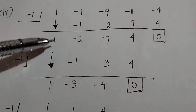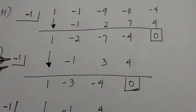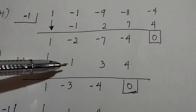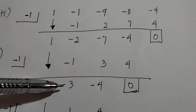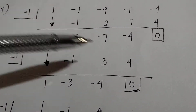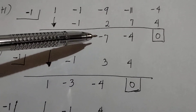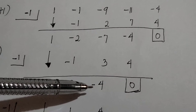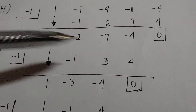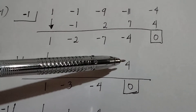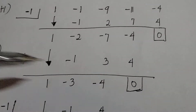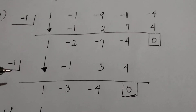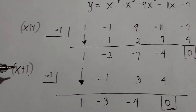Bring down 1. 1 times negative 1 is negative 1. Negative 2 plus negative 1 is negative 3. Negative 3 times negative 1 is 3. Negative 7 plus 3 is negative 4. Negative 4 times negative 1 is 4. Negative 4 plus 4 is 0 — that means negative 1 is again one of the rational roots, so the linear factor is x plus 1.